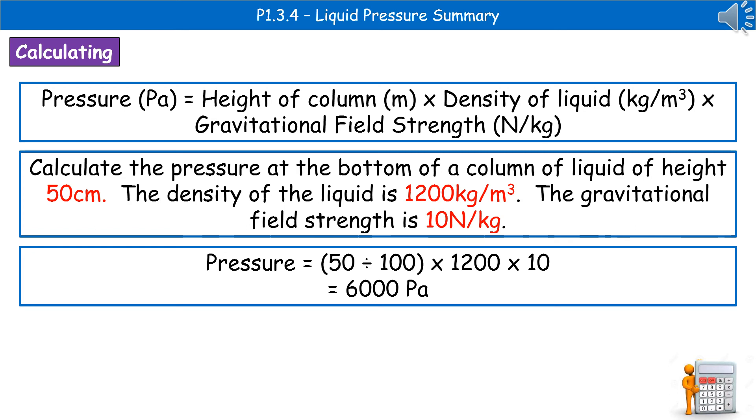And remember to write down all of your working so that even if you have a calculator fail in the exam, you can still pick up several marks. Never just write down the answer, even if you think it's the easiest calculation in the world, because in that situation of being in your real GCSE exam, it's really easy to make really stupid mistakes.